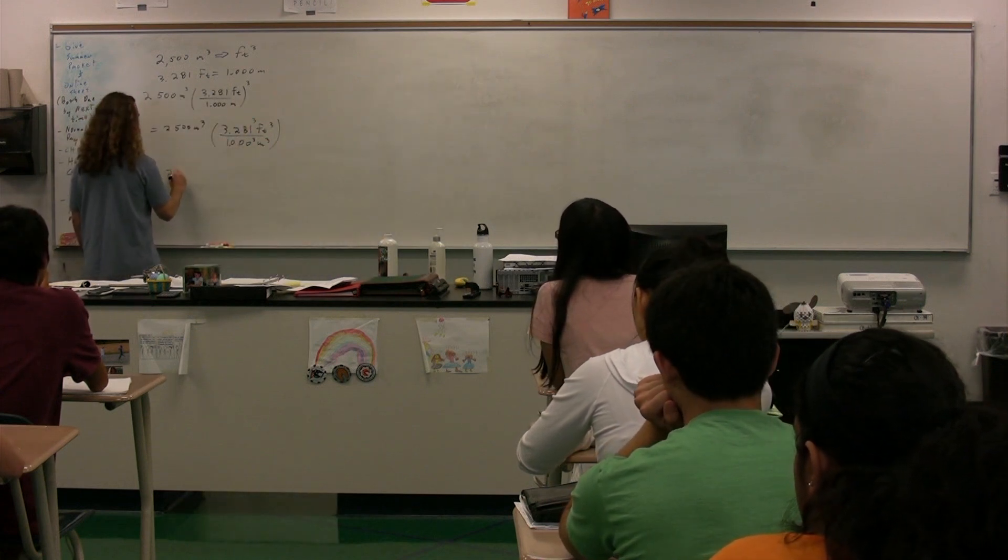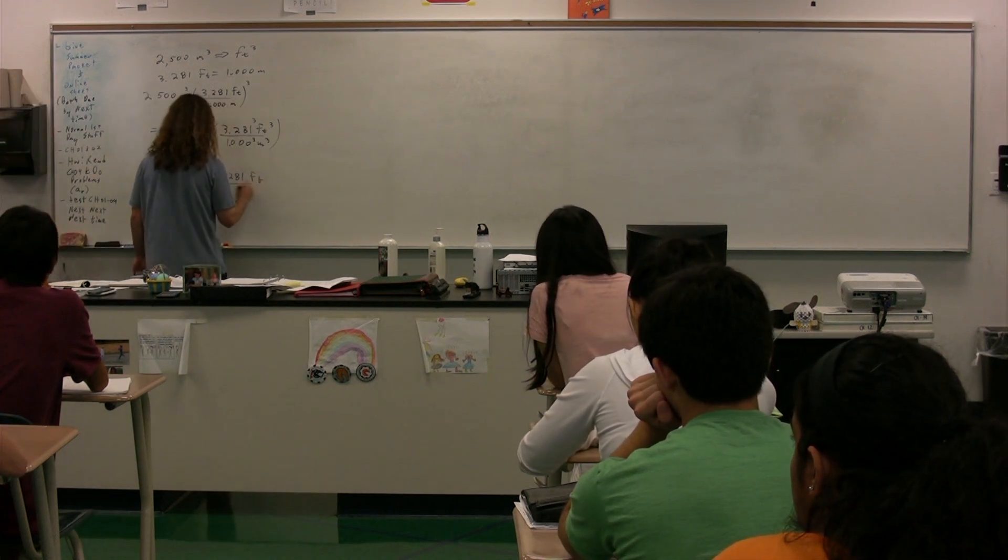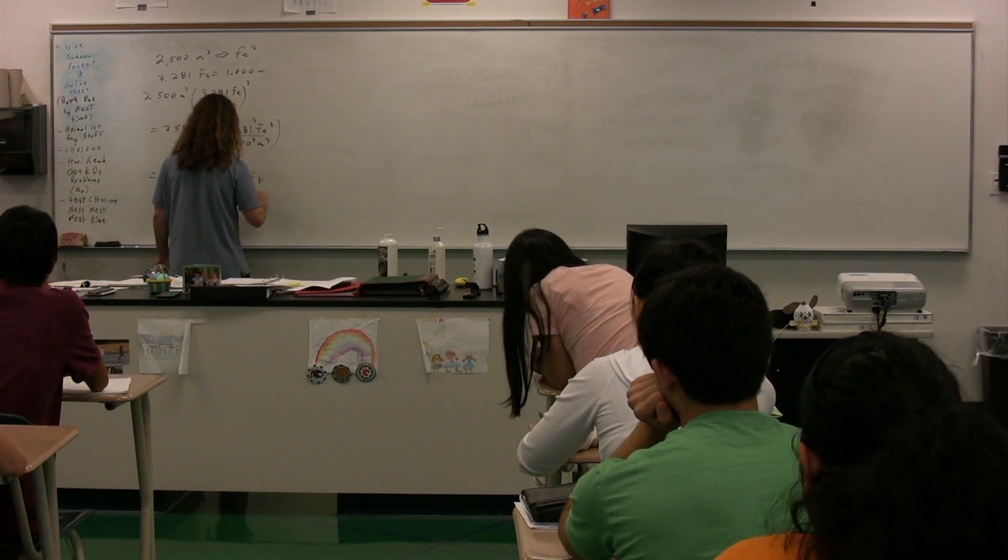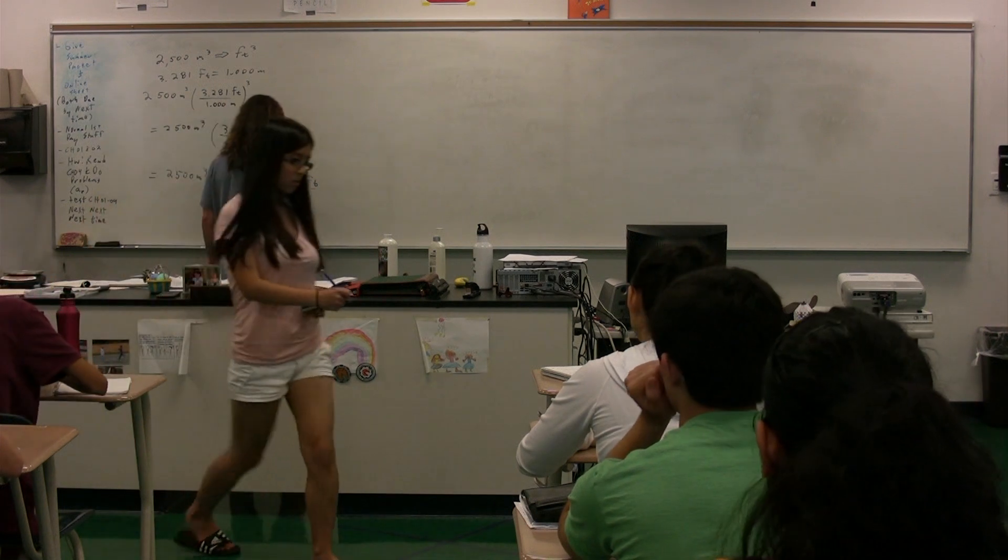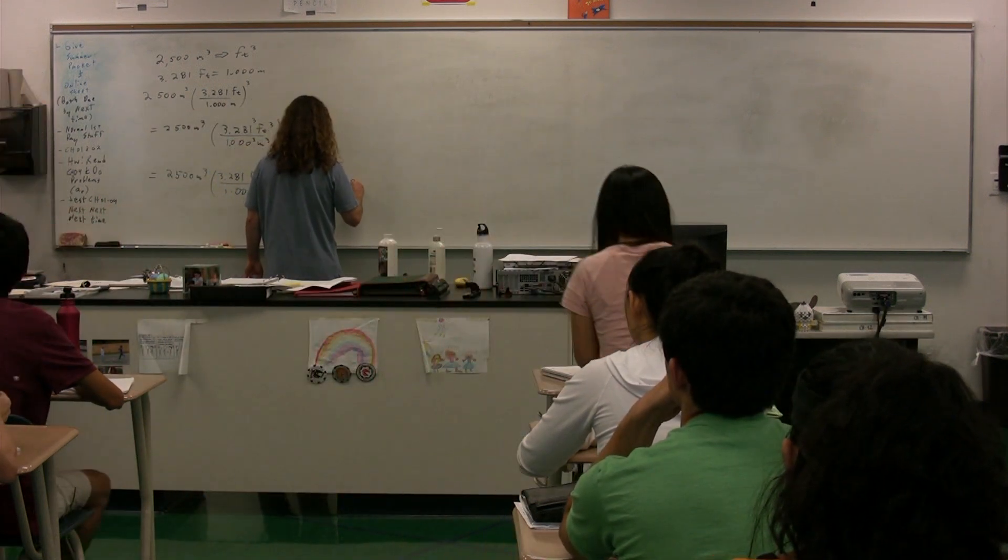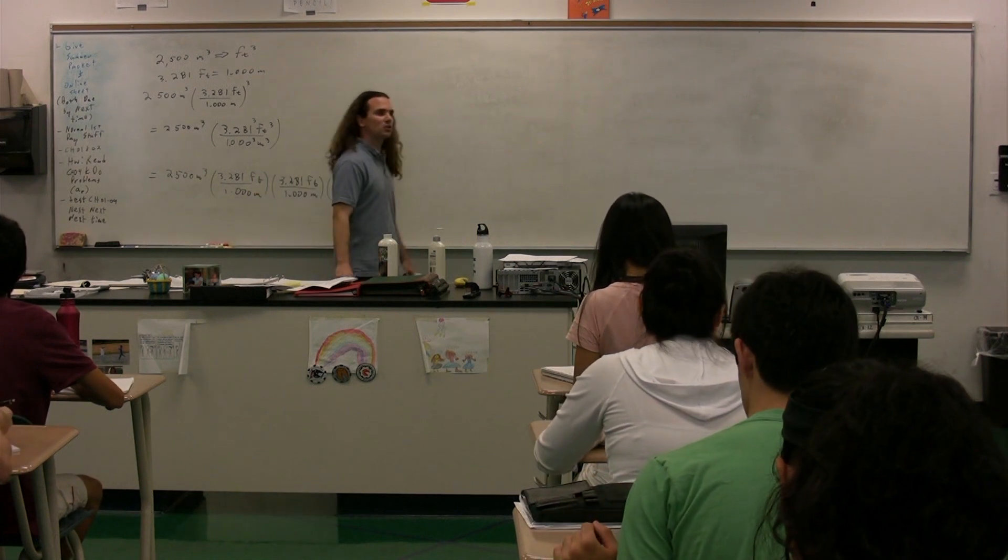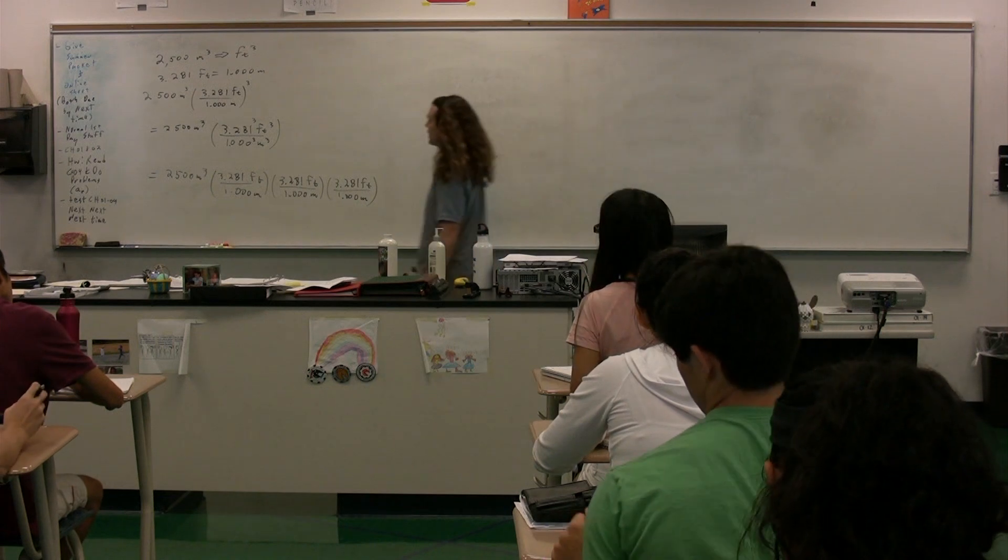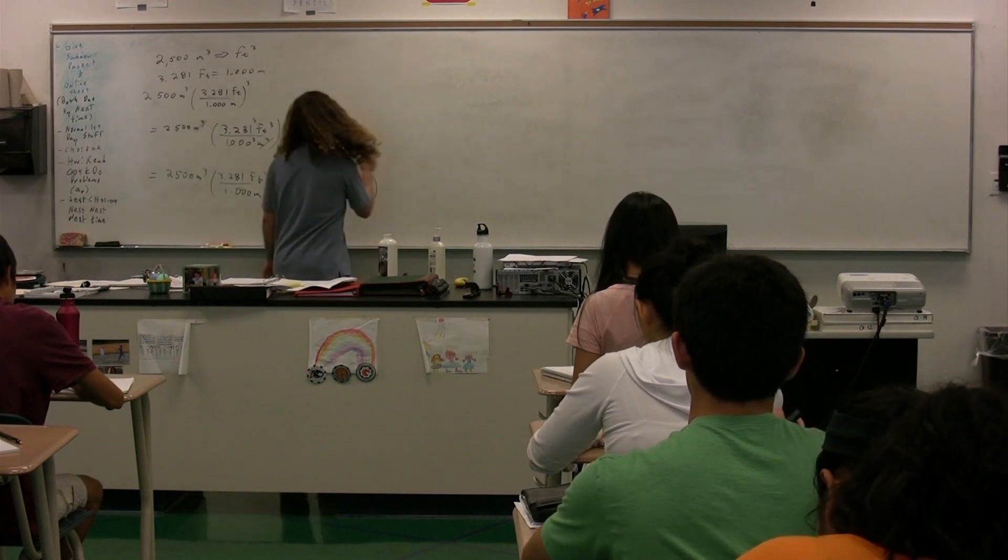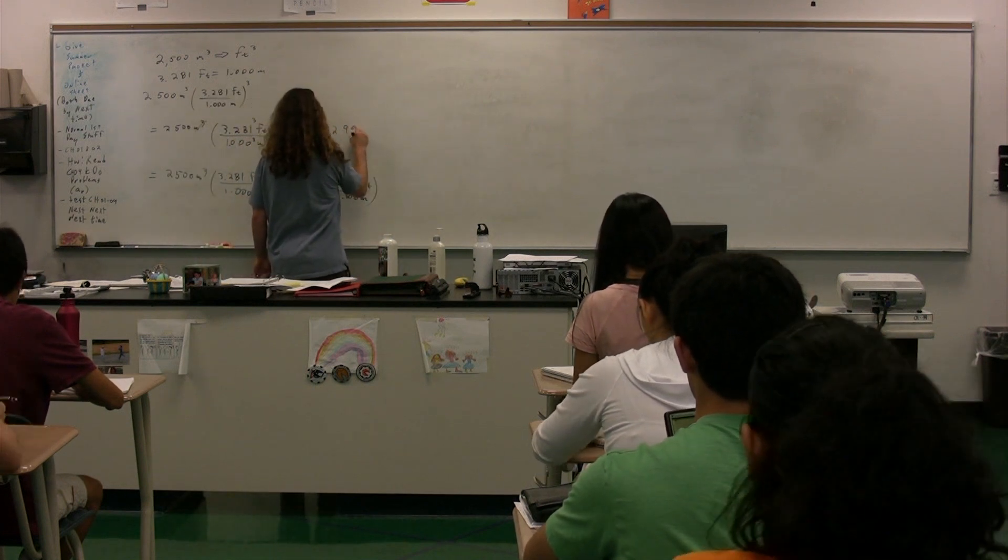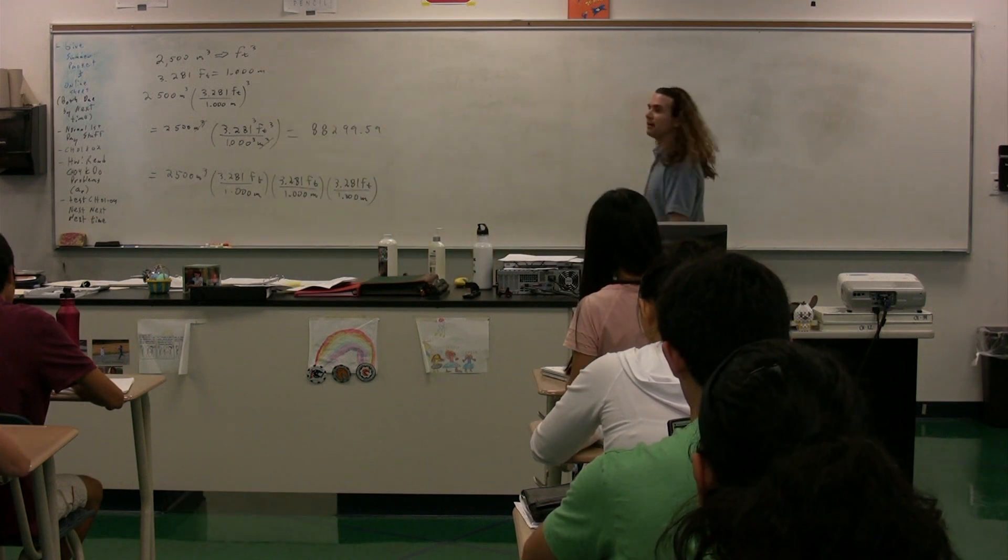We also need to cube the numbers. Because remember, this is 2,500 meters cubed multiplied by 3.281 feet over 1.000 meters times 3.281 feet over 1.000 meters, and one more time. Because what the cube means is multiplied by itself three times. So what do we get, please? 88,299.5 feet cubed.